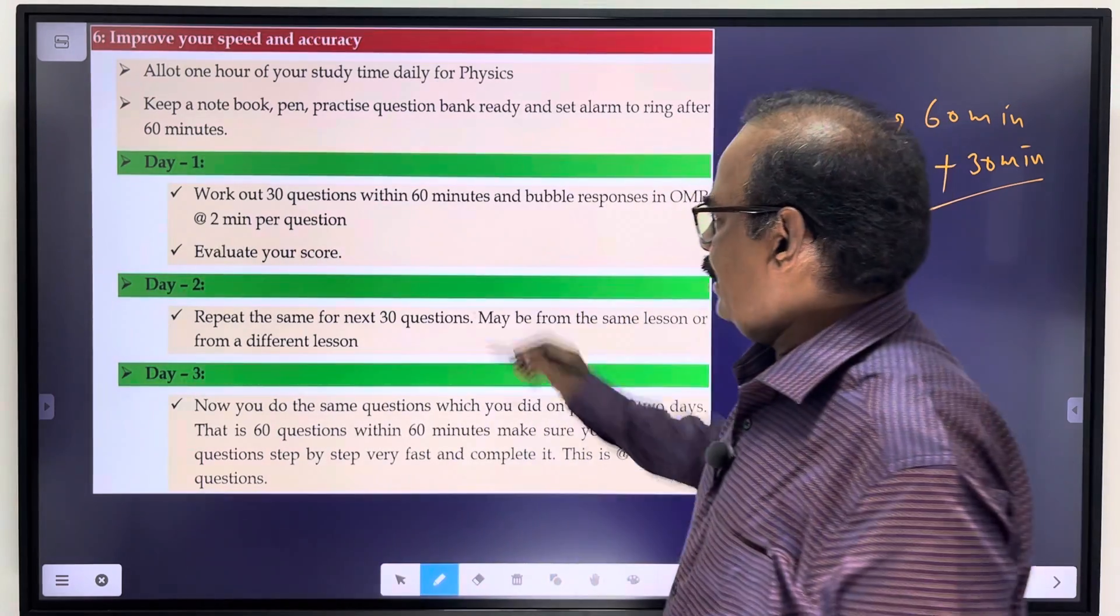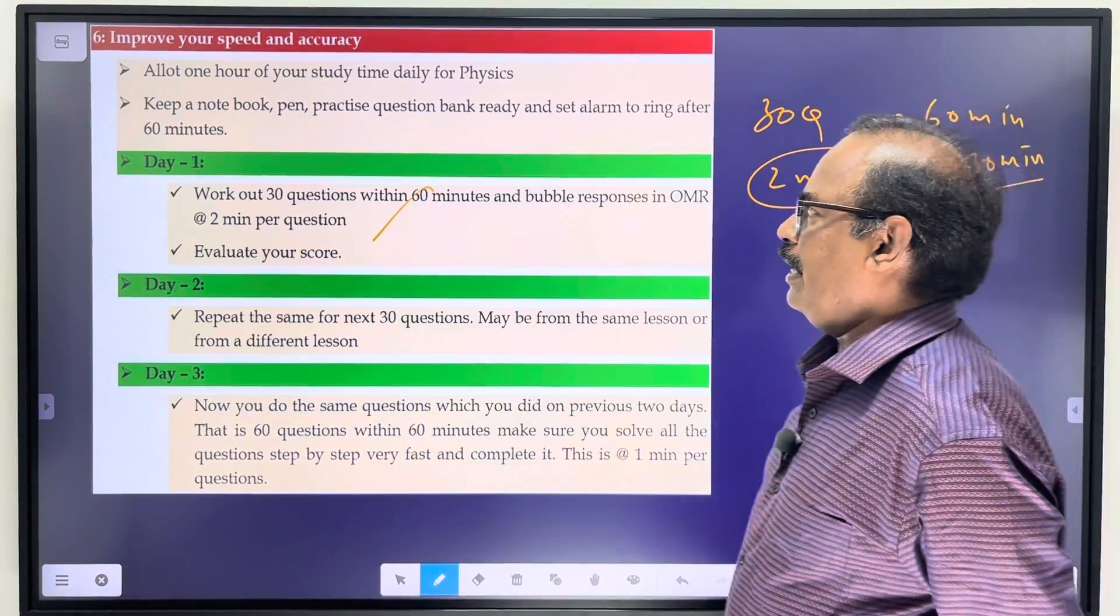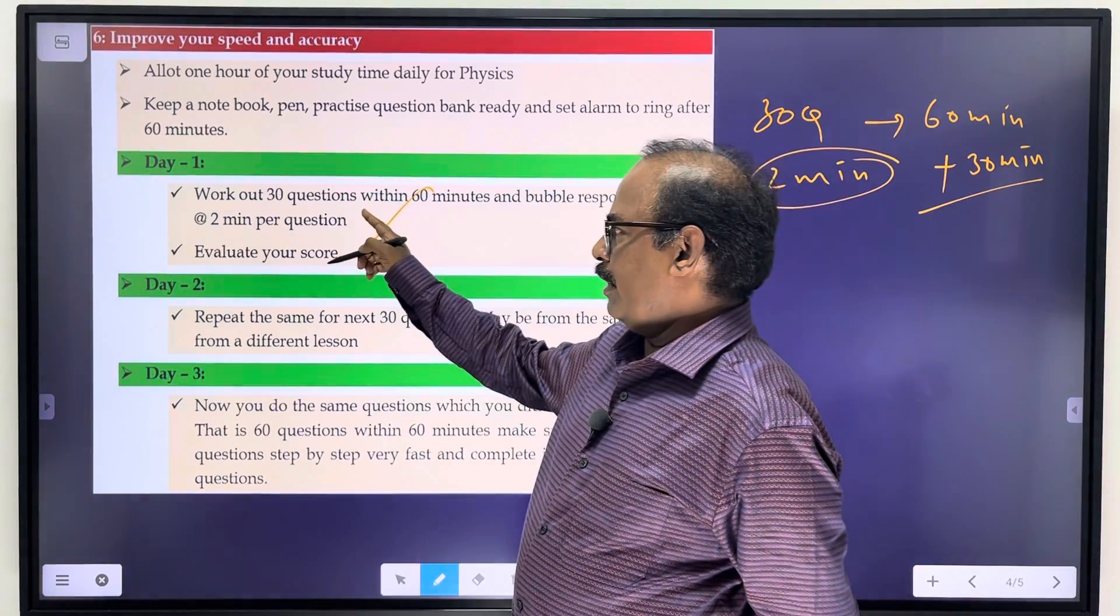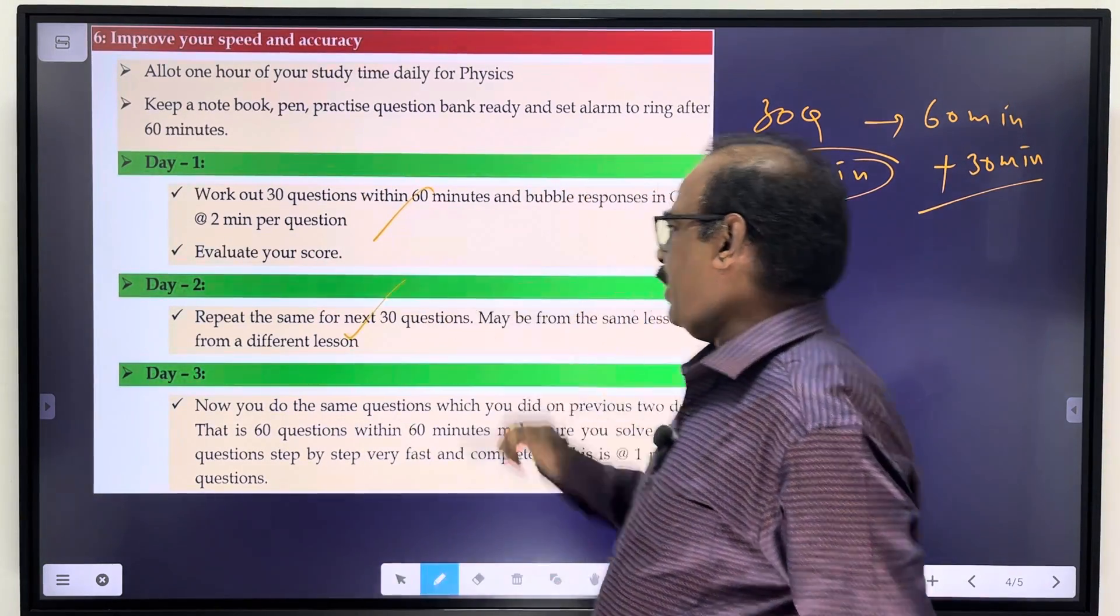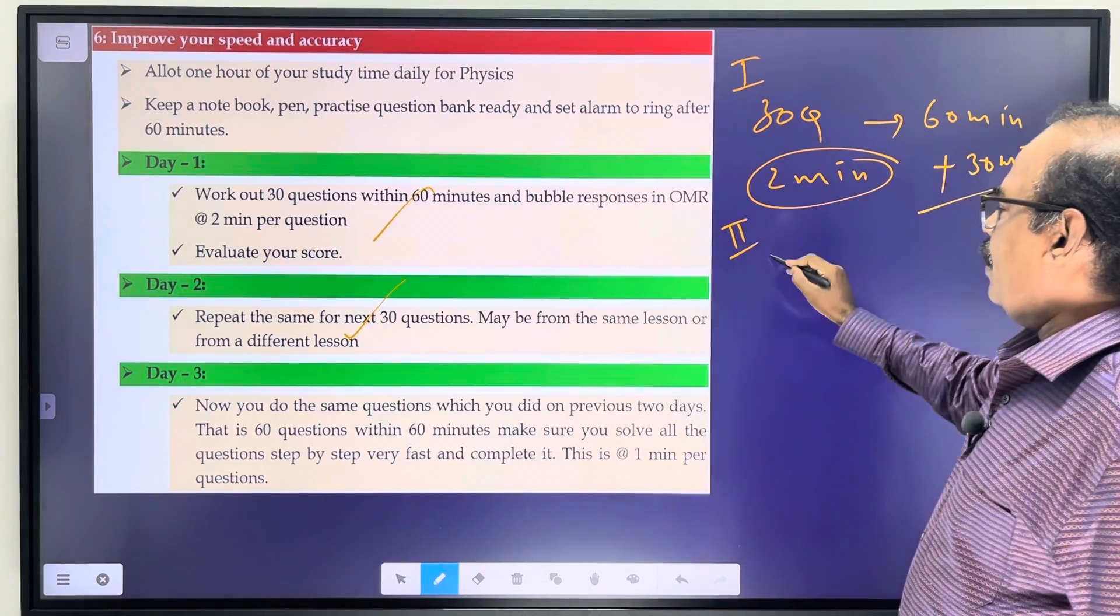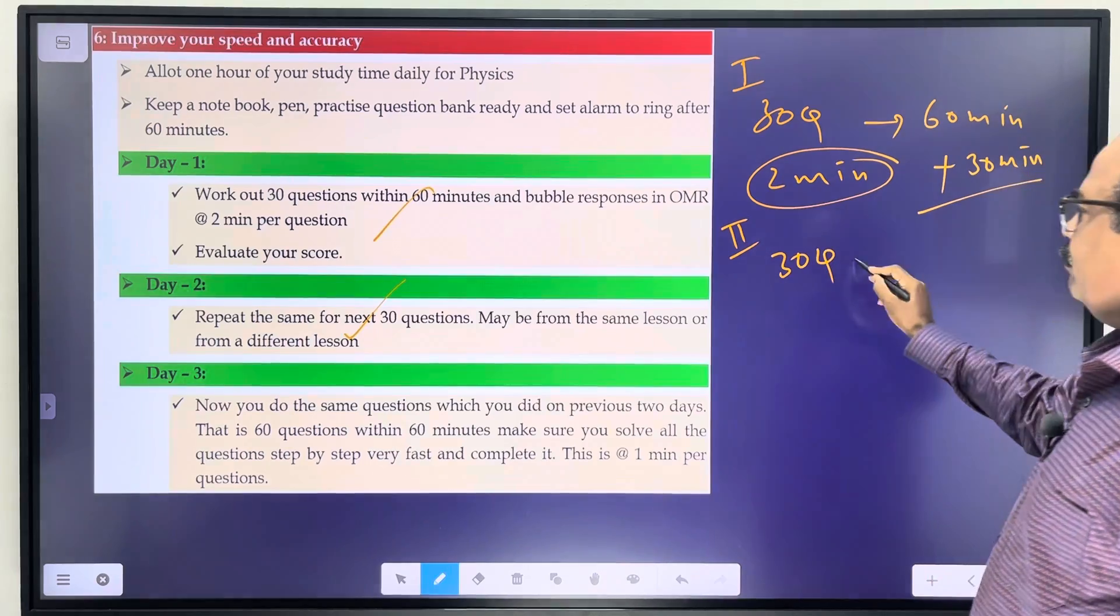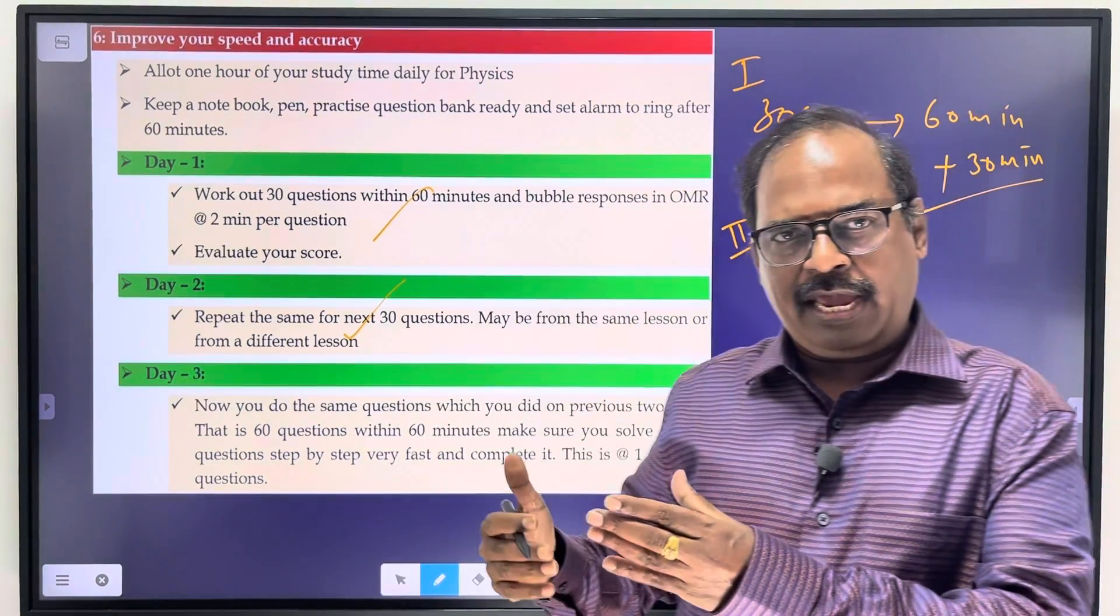You are doing this - keep a notebook, pen, practice questions, everything ready. One hour time, you do 30 questions in that study period, first study period, second study period. The previous year NEET has 60 questions.